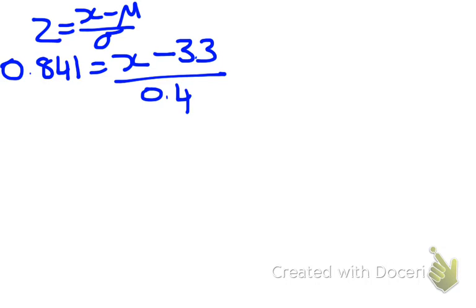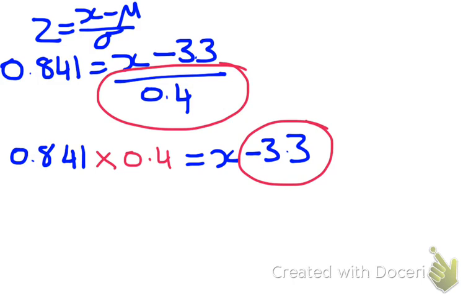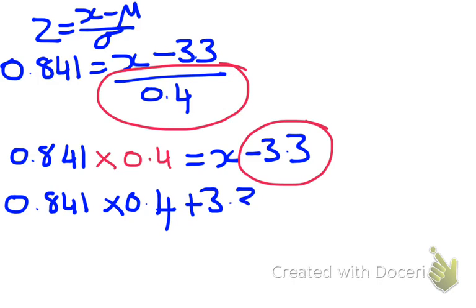So now I've got an equation that I want to solve to rearrange and find x. The first thing we're going to do is the opposite of dividing by 0.4 is to multiply by 0.4. I'm going to leave the 0.841 there and multiply by 0.4. On the right-hand side, I'm going to leave that x take away 3.3. Then I want to get rid of this take away 3.3, because I'm trying to get x by itself. So the opposite of subtracting 3.3 is adding 3.3. So I'm going to get 0.841 times 0.4 plus 3.3 is equal to x.